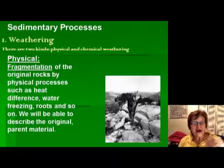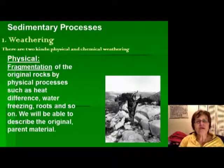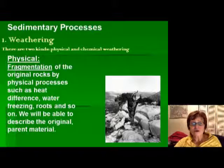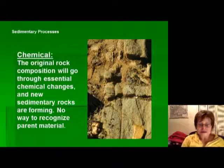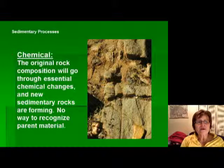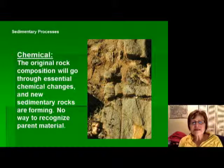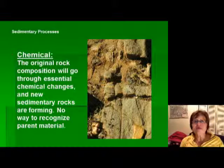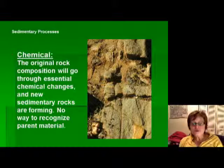From the fragments in a sedimentary rock formed by physical weathering, you will be able to tell what the original rock was. When you look at a sandstone, you know what kind of rock it used to be — this is very useful even in historical geology. With chemical sedimentary rocks, however, the original rock composition is completely destroyed; it goes into solution and then precipitates out as a completely different rock, so you cannot tell what the original rock was.